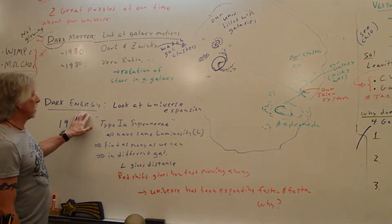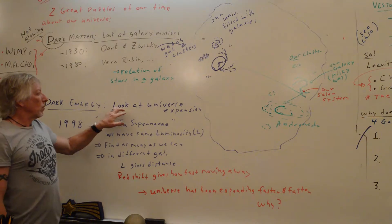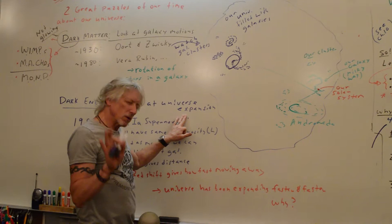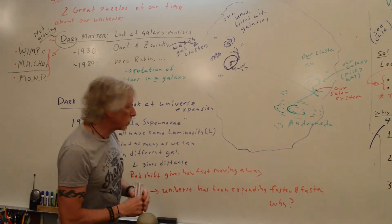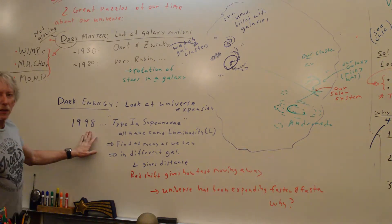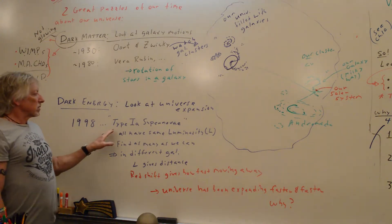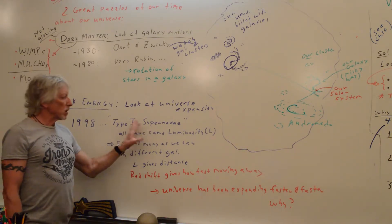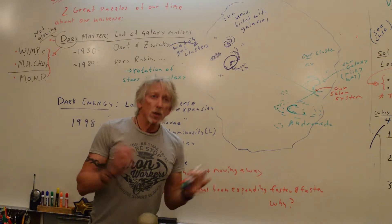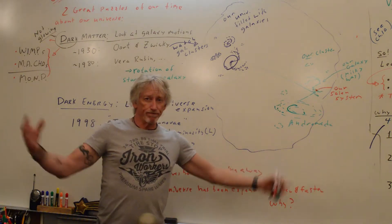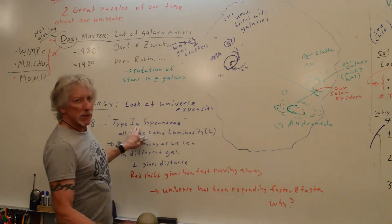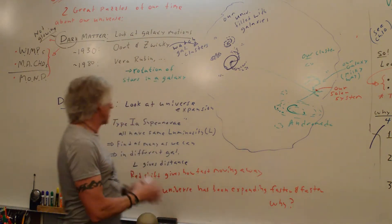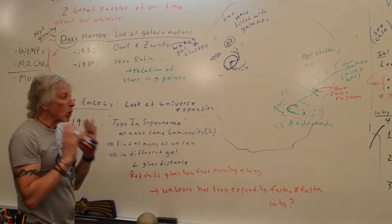What about dark energy? When we look at the universe expansion using these tools, around 1998, there's something called a type 1a supernova. A supernova is when a very large star explodes, and it always explodes the same way, giving off the same amount of light. This is amazing — you've heard about Cepheid variables and variable stars that blink, and from the rate at which they blink, you can get the luminosity, how much light they give off.